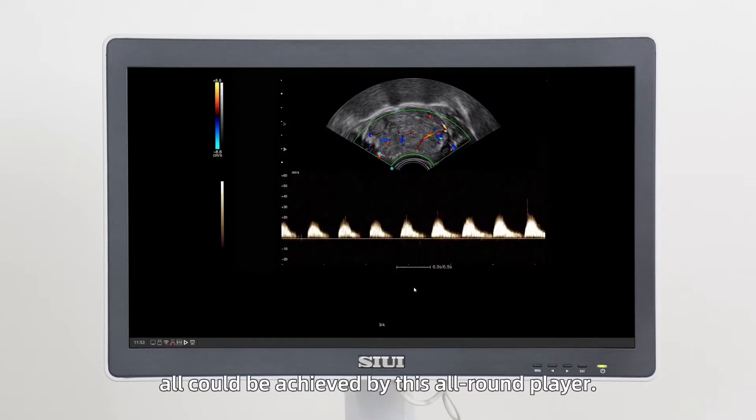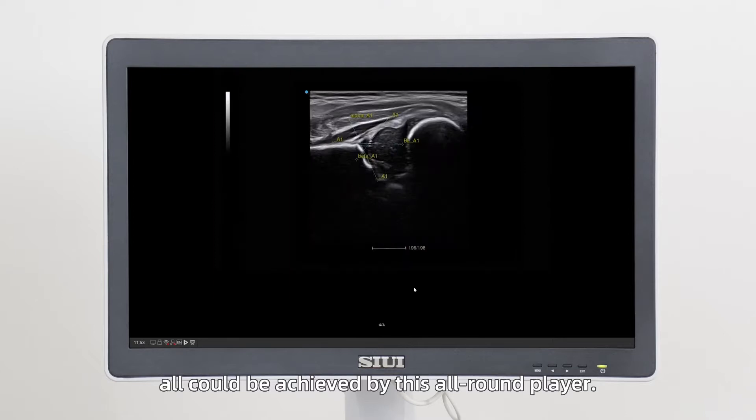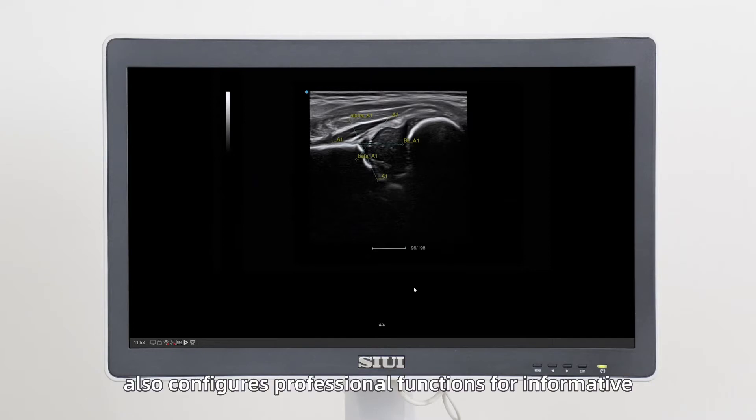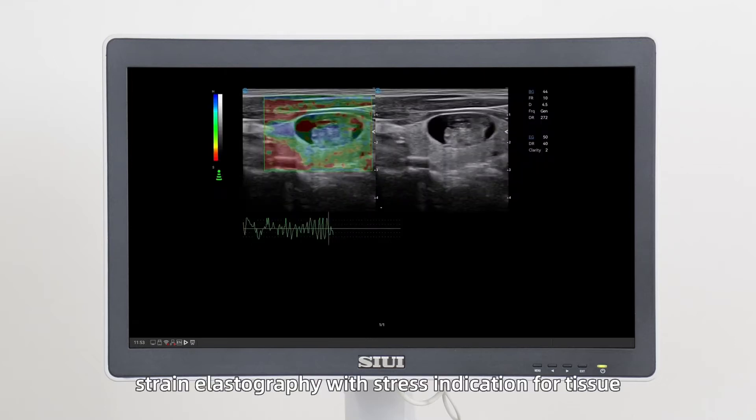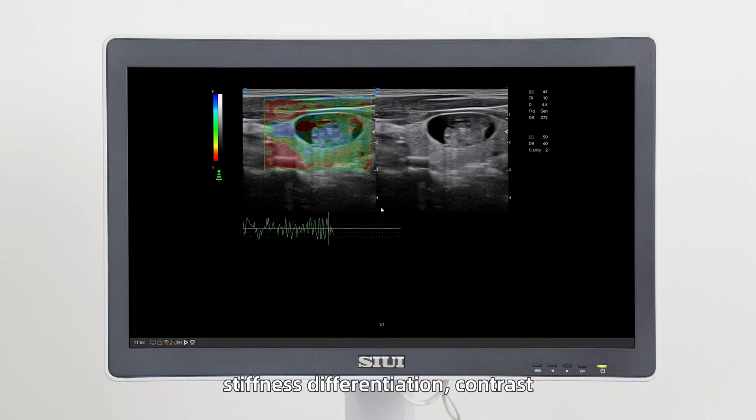All could be achieved by this all-round player. Apogee 6500 also configures professional functions for informative imaging, shear wave imaging for fatty liver evaluation, strain elastography with stress indication for tissue stiffness differentiation.